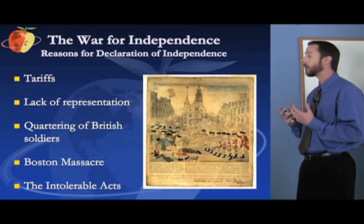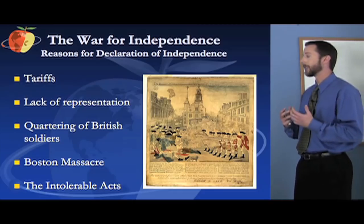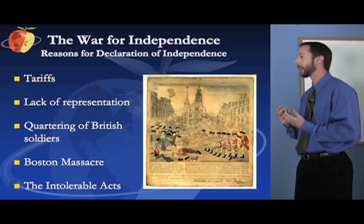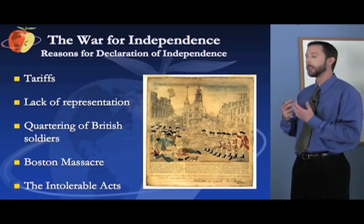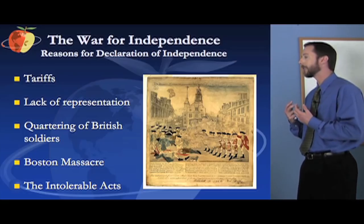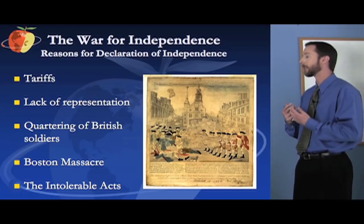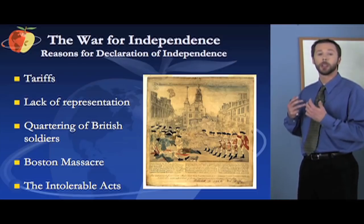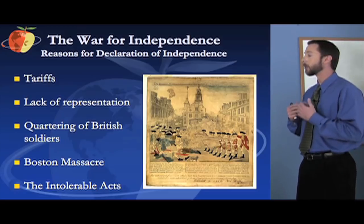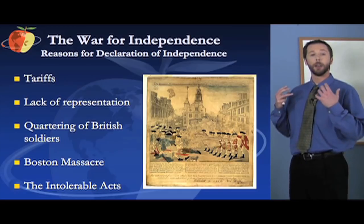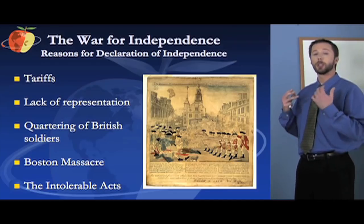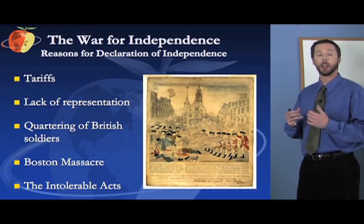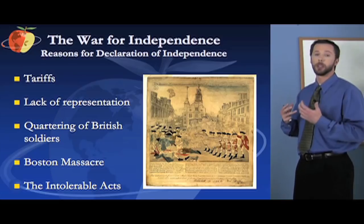To punish the colonists for their protests and things like the Boston Tea Party, the British also passed what the colonists termed the Intolerable Acts. These acts were basically designed to punish the colonists. They closed the port of Boston, gave increased power to the British royal governor in Massachusetts, and expanded the requirements for colonists to house and feed soldiers who were there to keep the colonists from rebelling. All of these things fed the fires of discontent, and soon many people were talking about breaking away from England, which led to the Declaration of Independence.